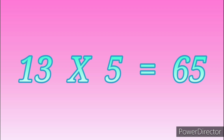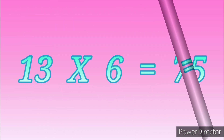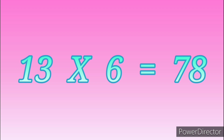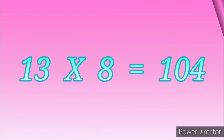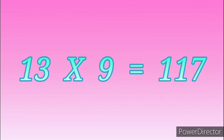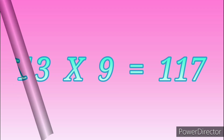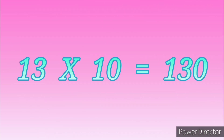Thirteen fives are sixty-five. Thirteen sixes are seventy-eight. Thirteen sevens are ninety-one. Thirteen eights are one hundred and four. Thirteen nines are one hundred and seventeen. Thirteen tens are one hundred and thirty.